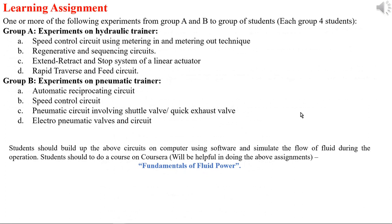Regarding the learning assignment, groups of four students will be formed. There are experiments in Group A and Group B. Group A experiments are on a hydraulic trainer using software simulation. These include speed control circuit using metering-in and metering-out techniques, regenerative and sequencing circuits, extend and retraction stop systems of linear actuators, and rapid traverse and speed circuits.